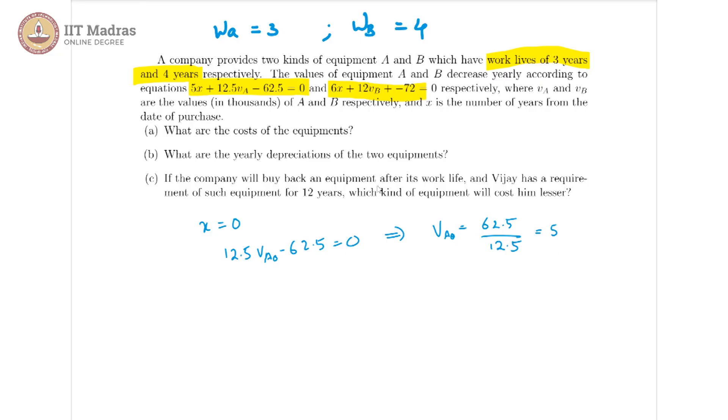Therefore the cost of A, I will call it CA, is rupees 5,000. Now let's work with B. Same thing again, we take x is equal to 0. So we have 12 VB minus 72 is equal to 0.